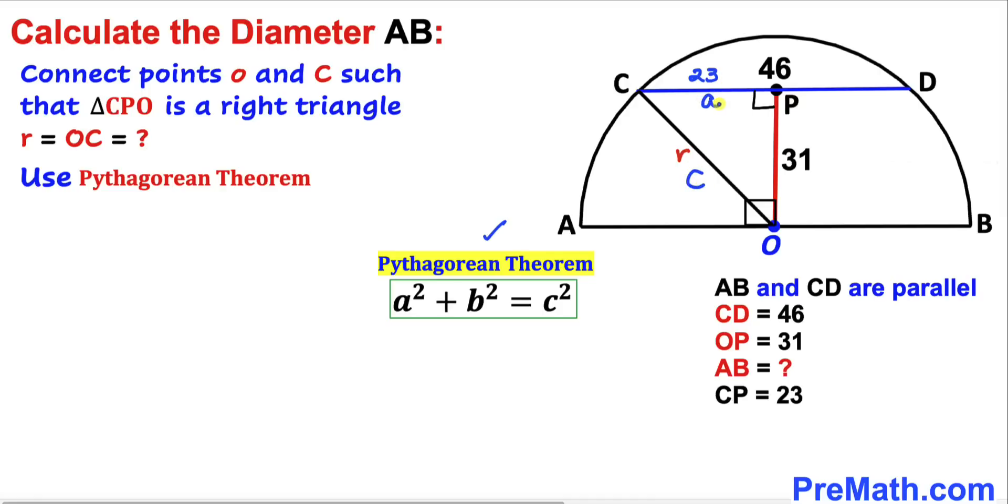Let's fill in the blanks in this Pythagorean formula. a in our case is 23, so this becomes 23² + b in our case is 31, so 31² = c in our case is radius r, so r².